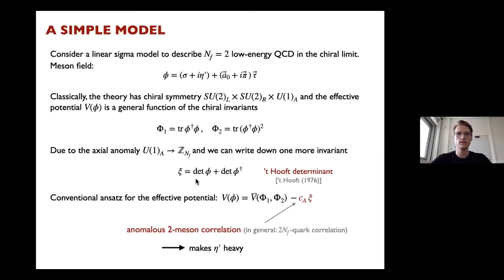In the matrix language, the 't Hooft determinant is just the determinant of φ. Looking through the literature, the conventional ansatz for the effective potential has a part which is a general function of the classical chiral invariants, and then a term which is linear in the 't Hooft determinant.